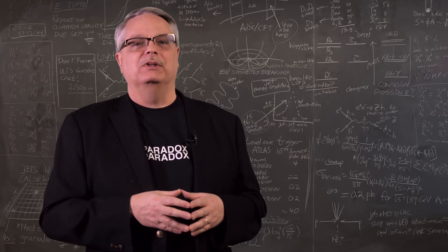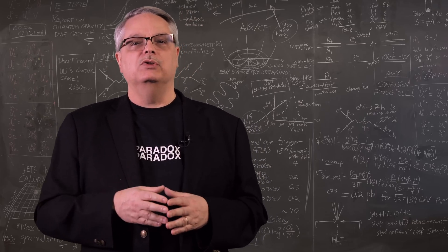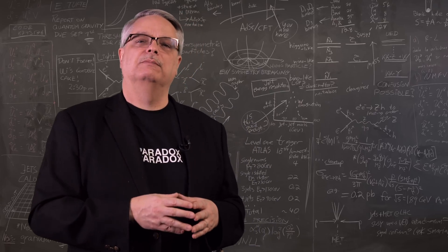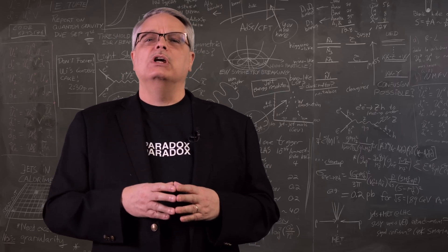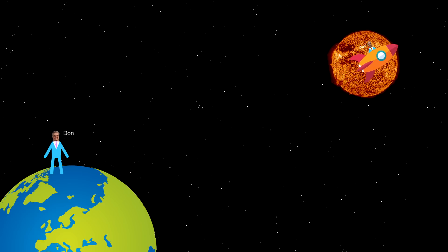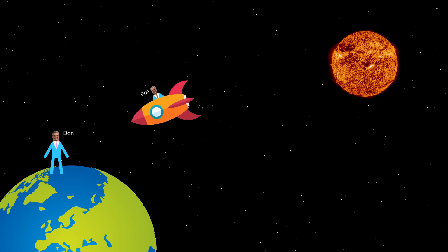A more reasonable explanation is that there is something that breaks the symmetry between the two. Something that makes Ron and Don's experience different. This approach uses the fact that Ron had to decelerate at Alpha Centauri and accelerate to come back. Further, in order to stop back at Earth, he needed to decelerate yet again.